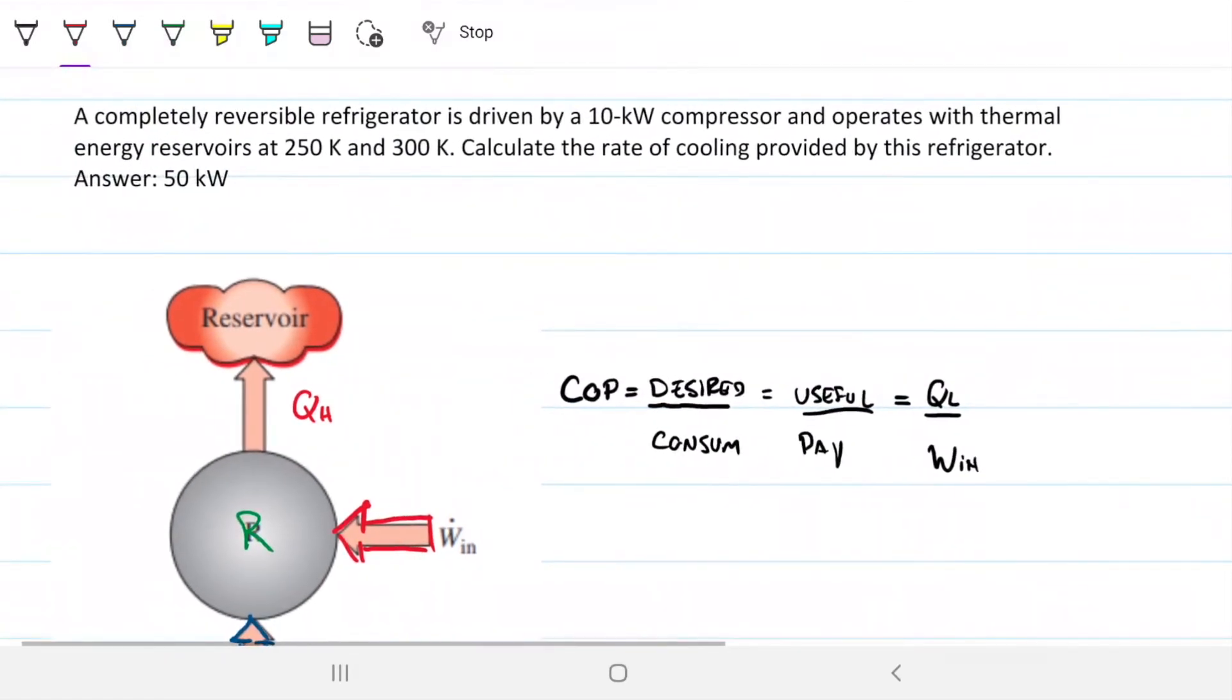So for this problem here, problem statement reads: A completely reversible refrigerator is driven by a 10-kilowatt compressor and operates with thermal energy reservoirs at 250 Kelvin and 300 Kelvin. Calculate the rate of cooling provided by this refrigerator.